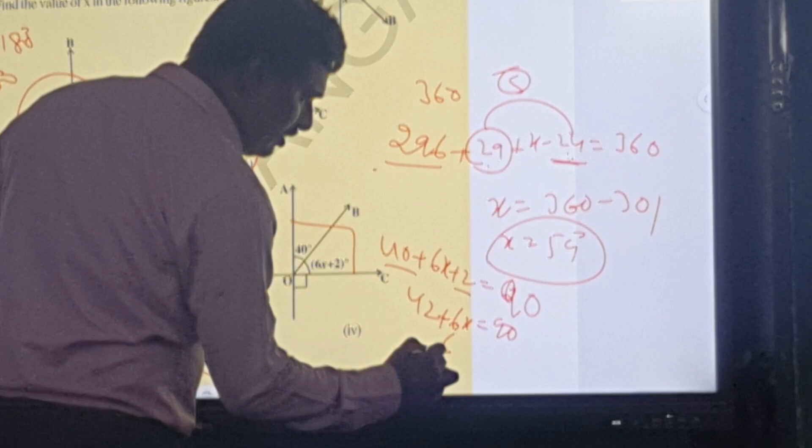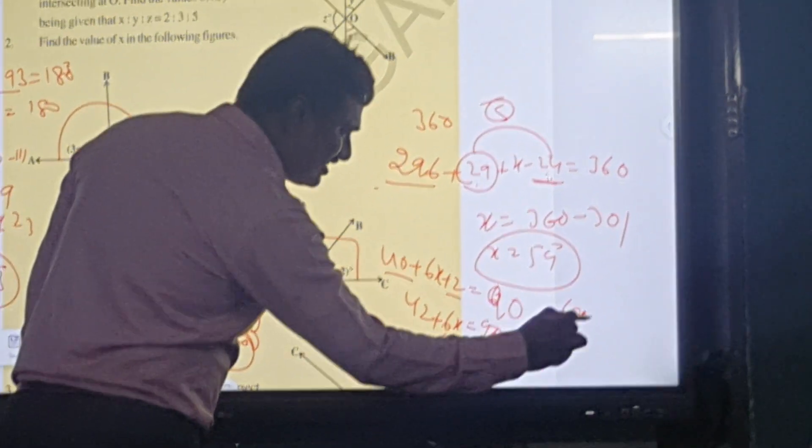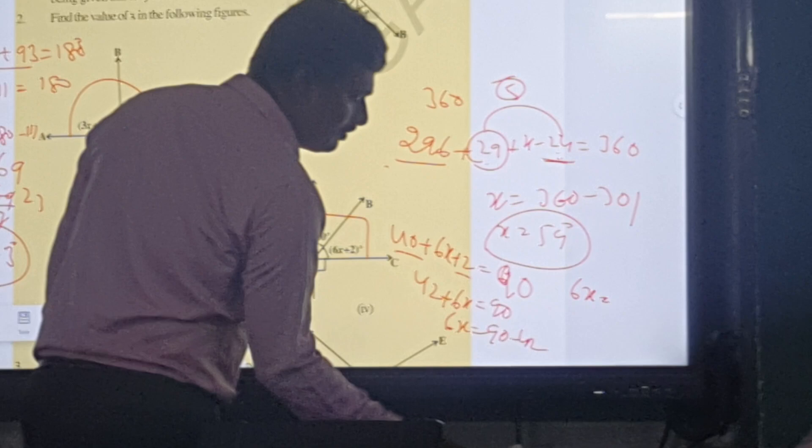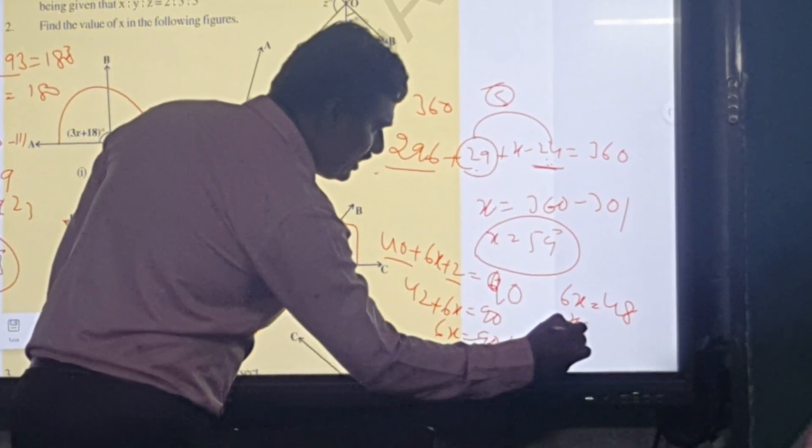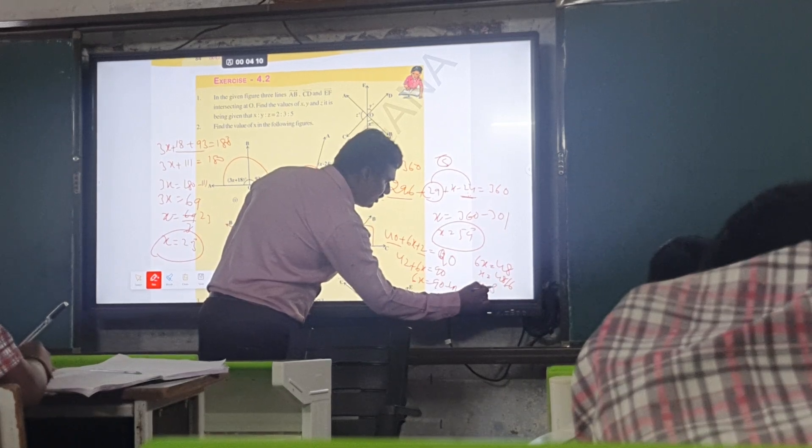What do you think? 6x is equal to 90 minus 48. 6x is equal to 48.